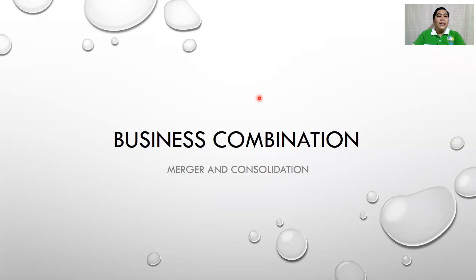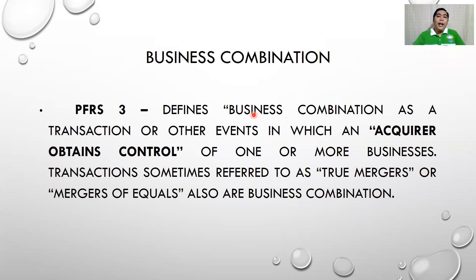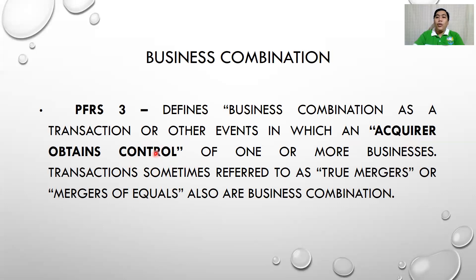Welcome everyone. Today we will discuss business combination, specifically merger and consolidation. According to PFRS 3, the standard used to account for business combination, a business combination is a transaction or other event in which an acquirer — the one who will buy or acquire — obtains control of one or more businesses. Transactions sometimes referred to as mergers or mergers of equals are also business combinations.